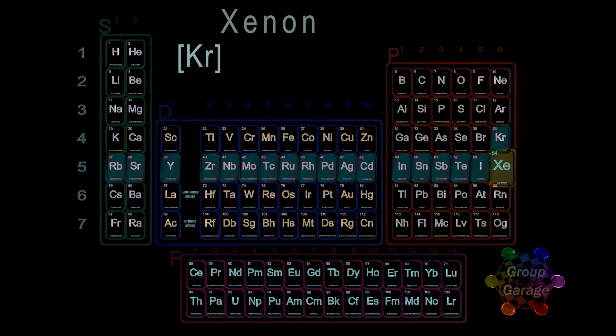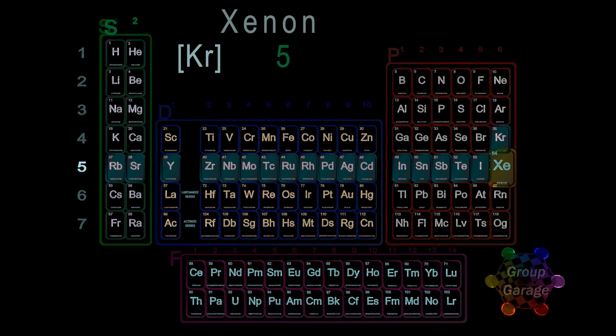In Period 5, the two elements Rubidium and Strontium fill up the S block with two electrons, so we write the period number 5, followed by the number of electrons in the S shell, S2.